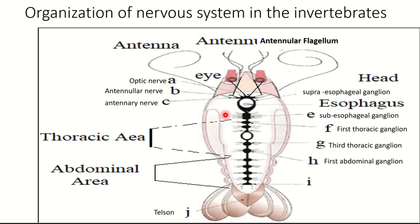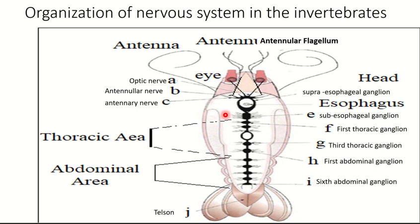As I mentioned, the shrimp is considered an invertebrate because its nervous system is not protected by any vertebral column — it is not protected by a backbone. Note also that the nervous system of the shrimp is located ventrally, not dorsally as in vertebrates.